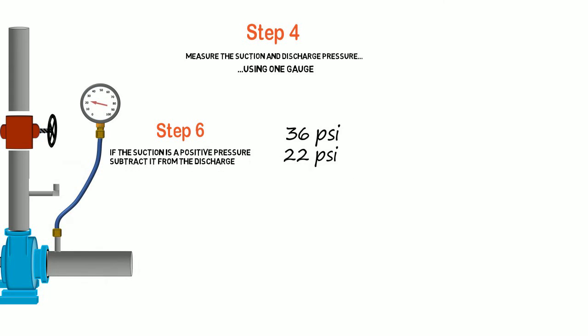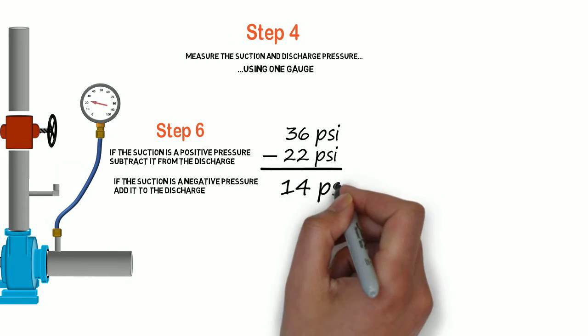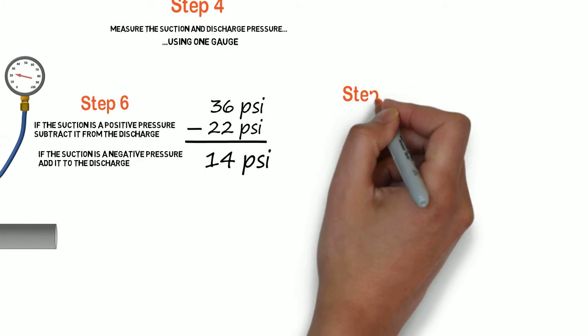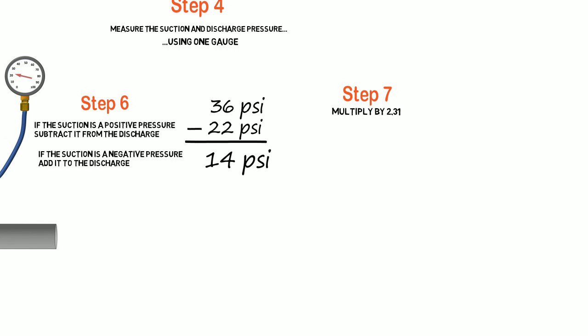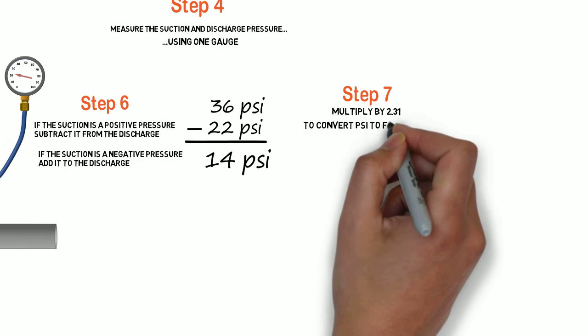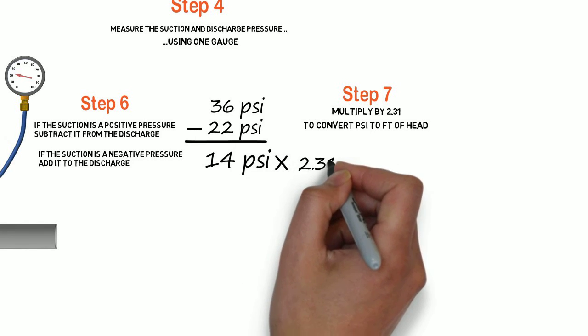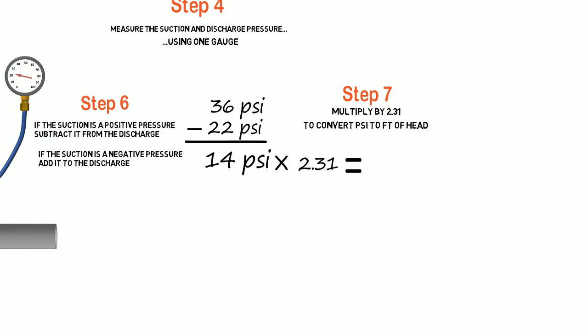Step six, if the suction was a positive pressure, we're going to subtract it from the discharge. If it was a negative pressure, we're going to add it. In our case, it was a positive, so we're going to subtract it. So 22 from 36 is 14 psi. Write it down. Now we have to convert psi to feet of head. We do that by multiplying it by 2.31. So 14 times 2.31 equals, drumroll, 32.34. We'll call it 32.